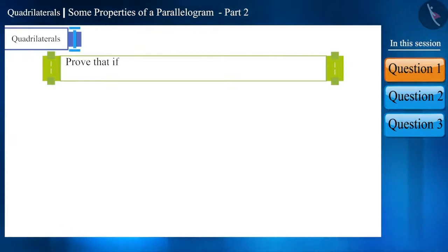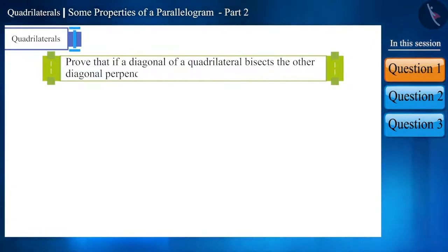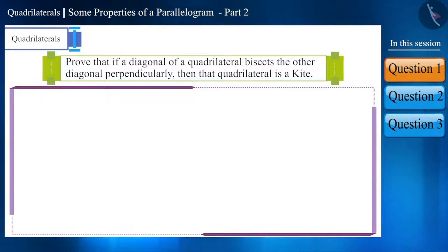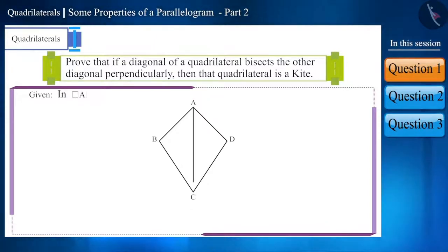We have to prove that if a diagonal of a quadrilateral bisects the other diagonal perpendicularly, then that quadrilateral is a kite. Friends, first of all, let's draw a figure according to the statement. Suppose ABCD is a quadrilateral and diagonal AC is bisecting diagonal BD perpendicularly at point O. We have to prove that quadrilateral ABCD is a kite.